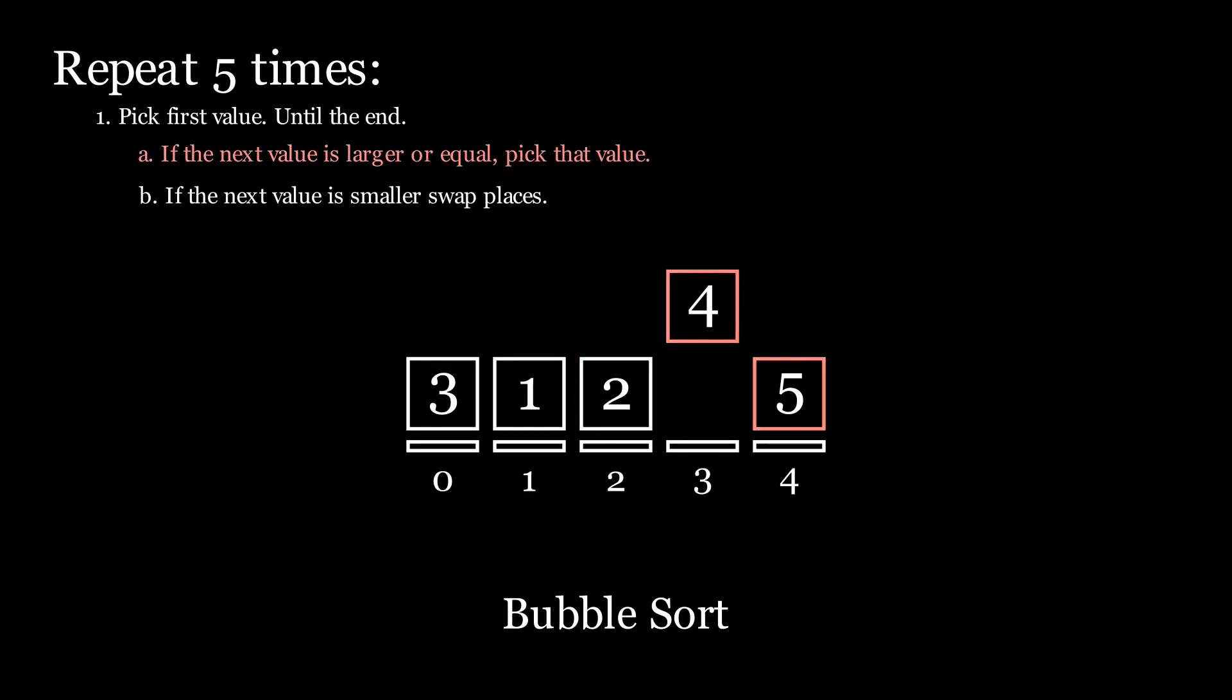Finally, we compare 4 with 5 and 5 is larger than 4, so we perform rule A and we pick value 5 as our new value. Then 5 has no more values to compare to, so we set it down since we have repeated all our rules until the end of the list. Let's now speed up the animation and see the sorting play out.